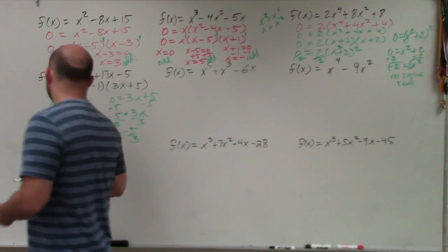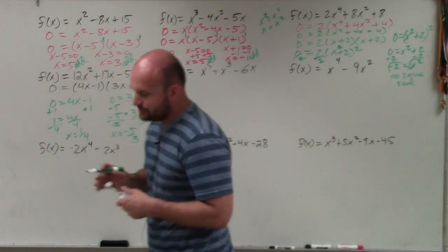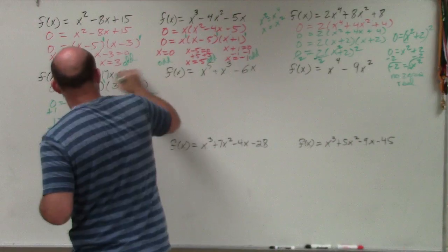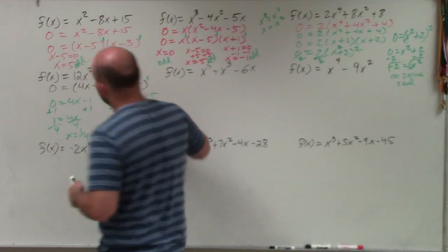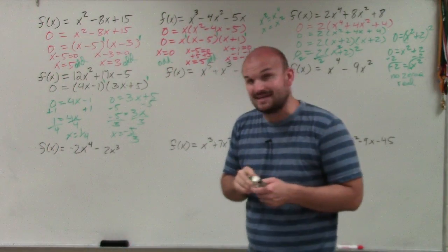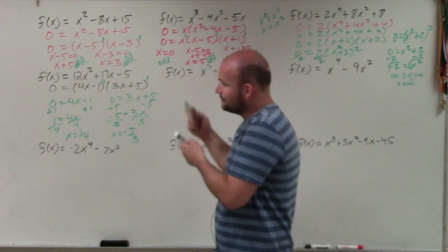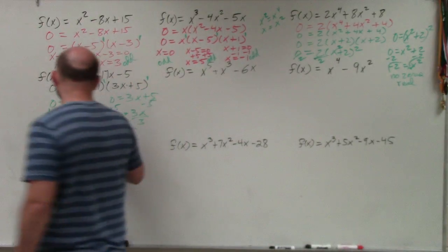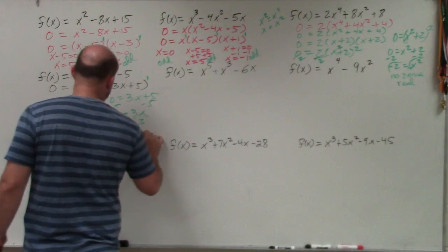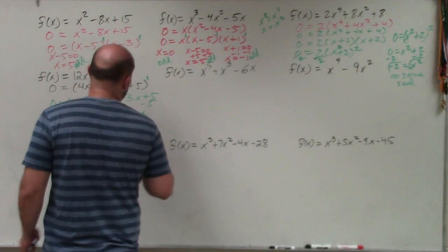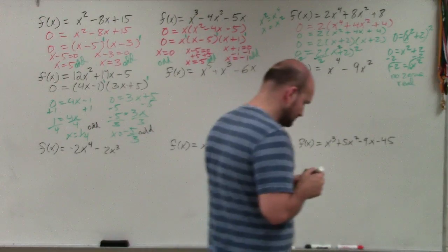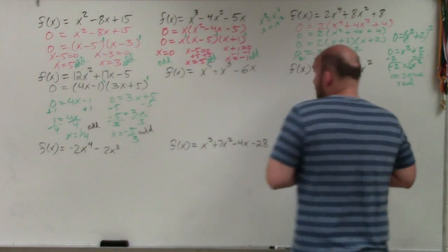So we have x equals 1 fourth and x equals negative 5 thirds. Going back and looking at the powers of our factors, the powers of both factors are going to be odd. So we have another example of odd multiplicity.